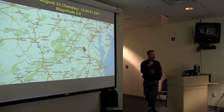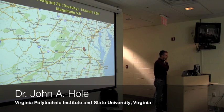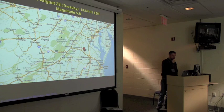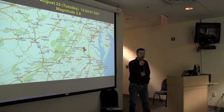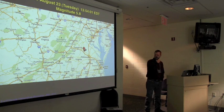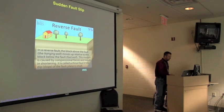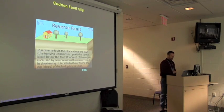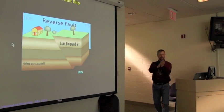The earthquake occurred a little bit before 2 p.m. local time on a Tuesday — for me that was the second day of classes, the beginning of the semester. Magnitude 5.8, it occurred about halfway between Richmond and Charlottesville, just barely off of I-64, about six or eight kilometers off of I-64. It occurred on a reverse fault.